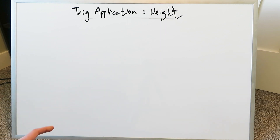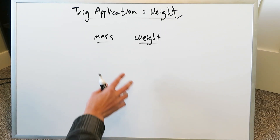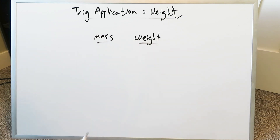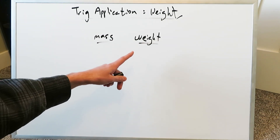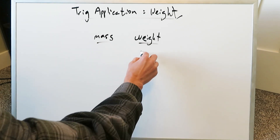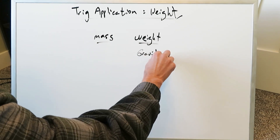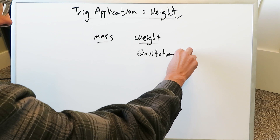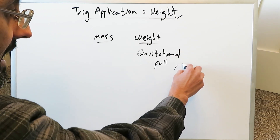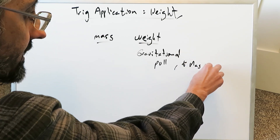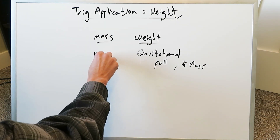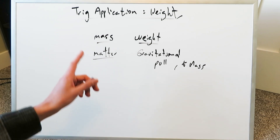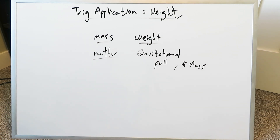Trigonometry application: weight. Before we get into the main part of this video, let's talk about these two terms — mass and weight. Mass is the amount of matter an object has. Weight is not the same as mass; it's the gravitational pull on that object. The amount of matter you have does not change from place to place, but your weight can change from place to place.